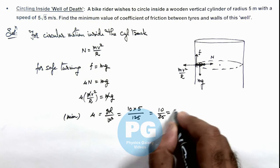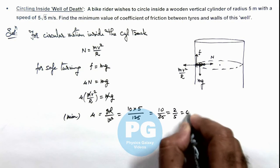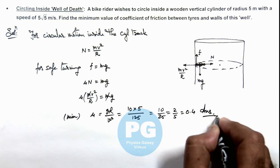So this will be 10 by 25 or this can be further written as 2 by 5 which is 0.4 that will be the final result of this problem.